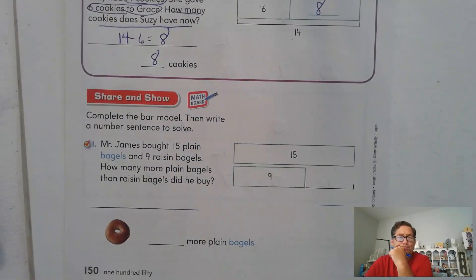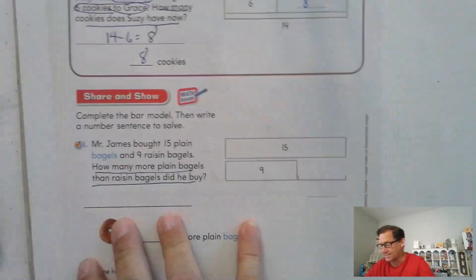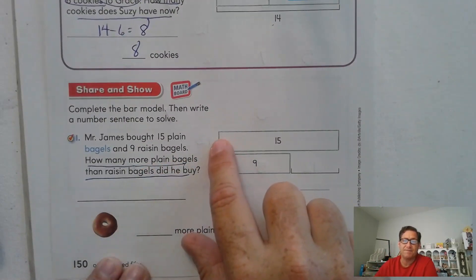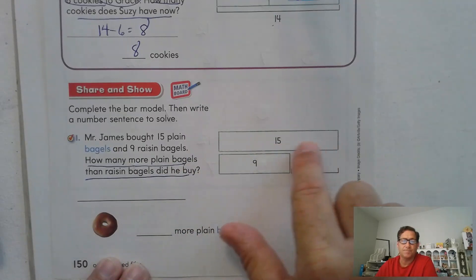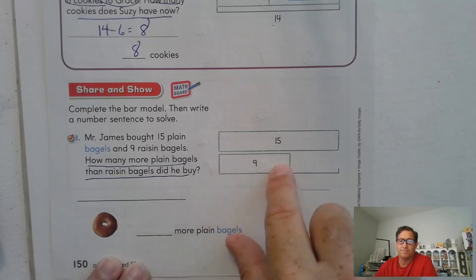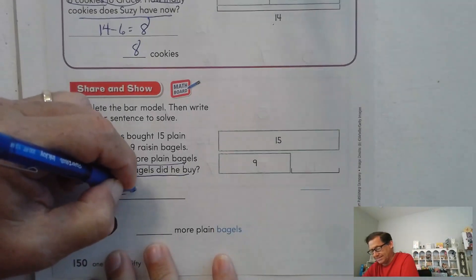Okay? All right, let's continue practicing. Complete the bar model and then write a number sentence to solve. Mr. James bought 15 plain bagels and 9 raisin bagels. How many more plain bagels than raisin bagels did he buy? So again, because it says how many more, we basically have to find out how much longer is the plain bagels bar than the raisin bagel bar? Well, to figure out this missing, or how much more, we're going to subtract. So 15 minus 9.